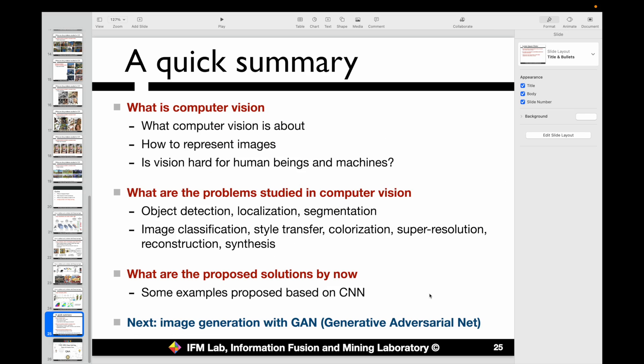Okay, so let's do a very quick summary for this section. In this part, we talked about what computer vision is about, and how to represent images as matrices: black-white, grayscale, or color images.